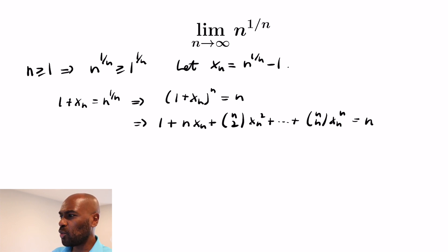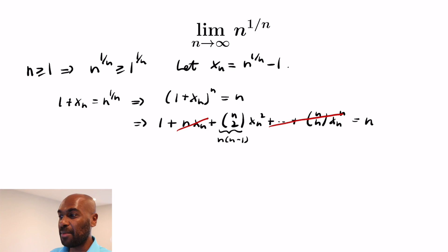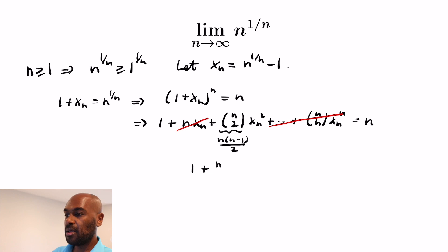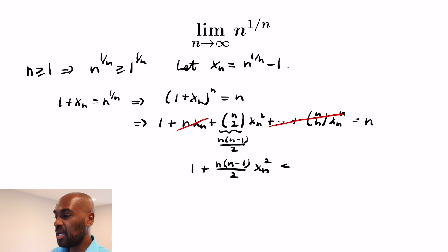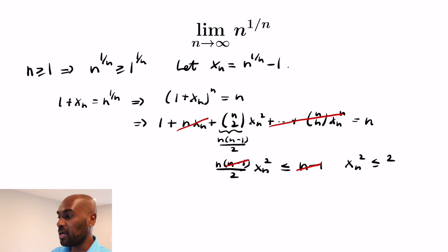How do we get an estimate here? We throw away all the tail terms and the x_n term. Now C(n,2) is n(n-1)/2. So we can write the expression involving x_n² only, and say that 1 + n(n-1)/2 · x_n² is less than or equal to n. Rearranging, we get x_n² is less than or equal to 2/n.